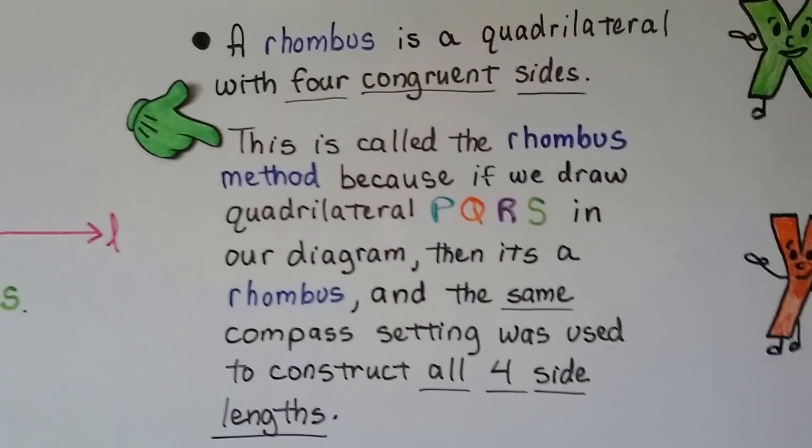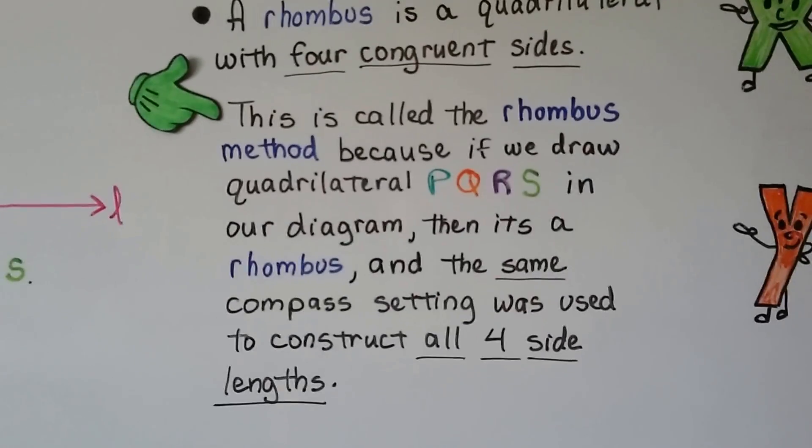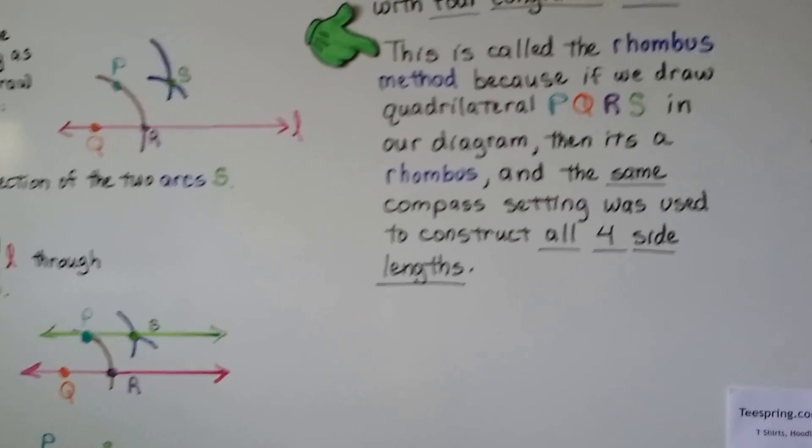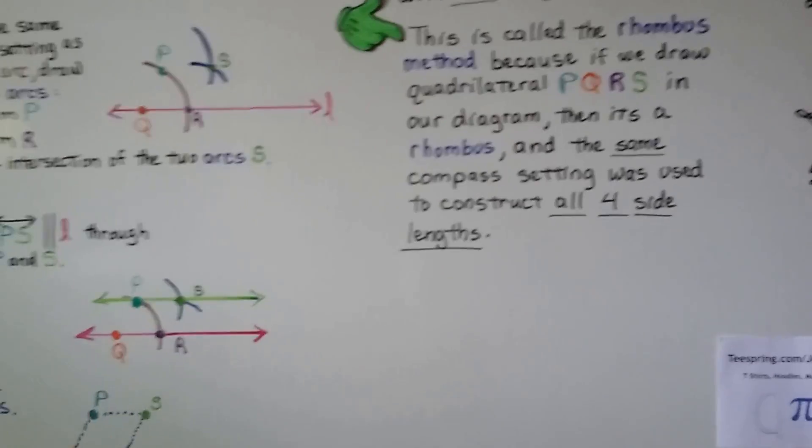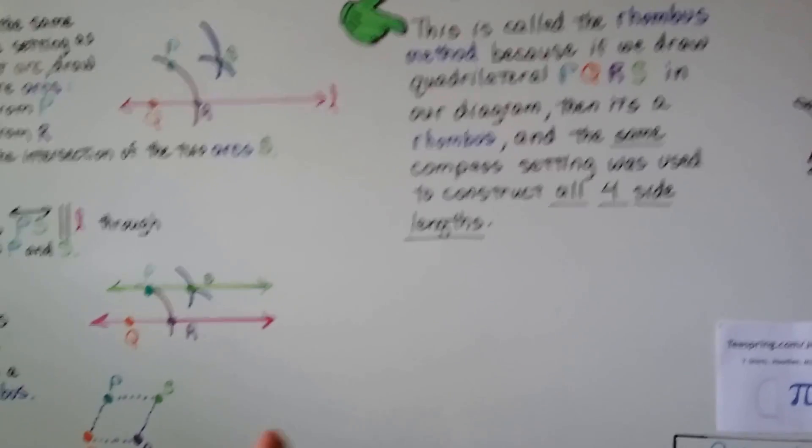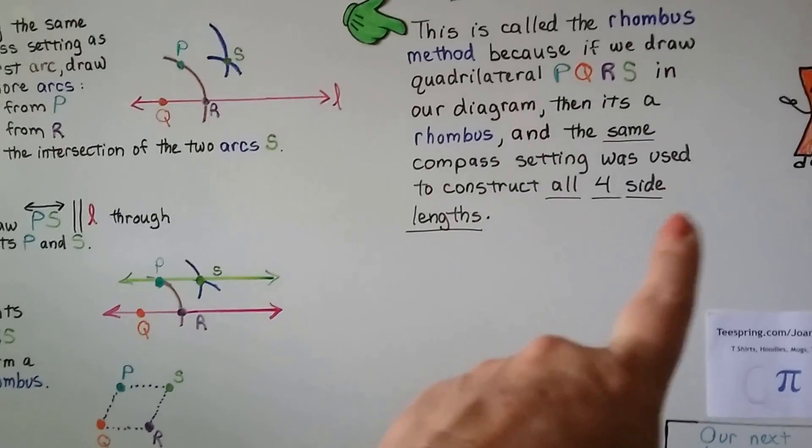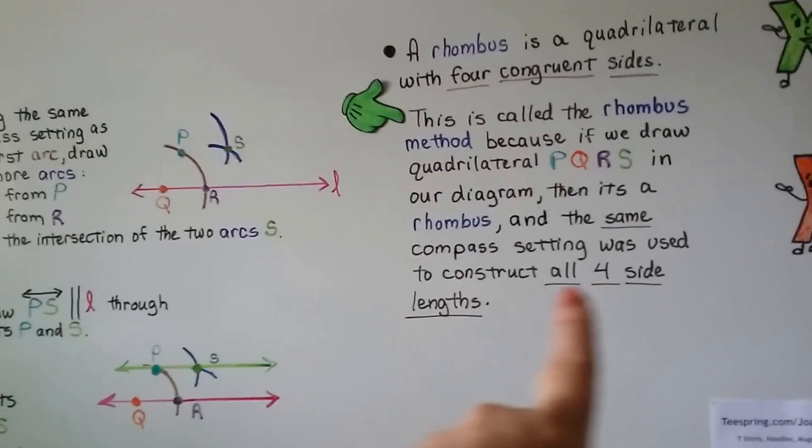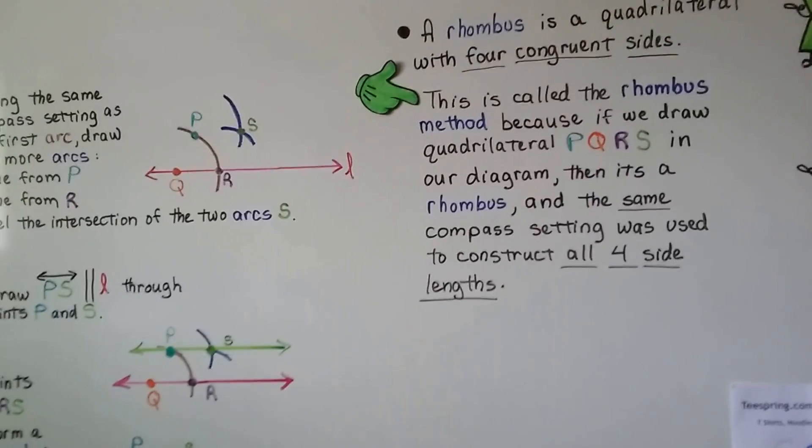And this is called the rhombus method because if we draw a quadrilateral PQRS in our diagram, then it's a rhombus. And the same compass setting was used to construct all four side lengths. And a rhombus has four congruent sides, and we used the same measure for all four side lengths.